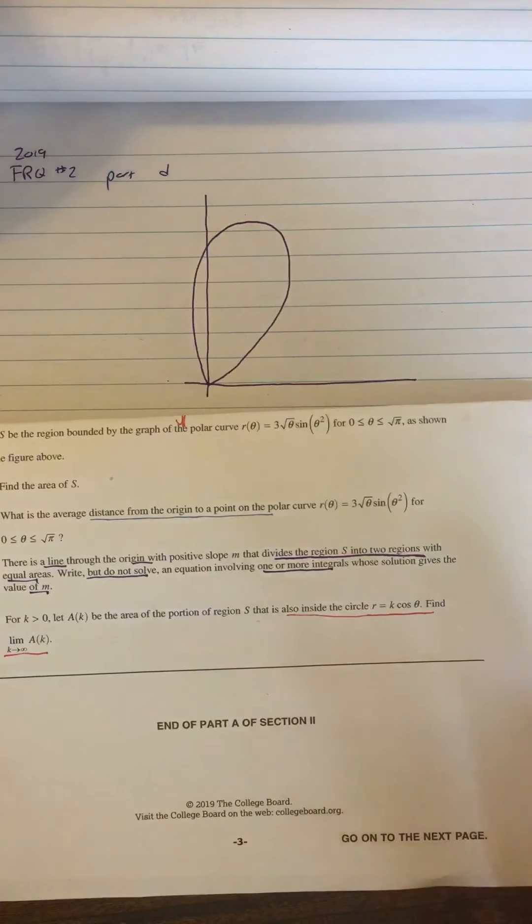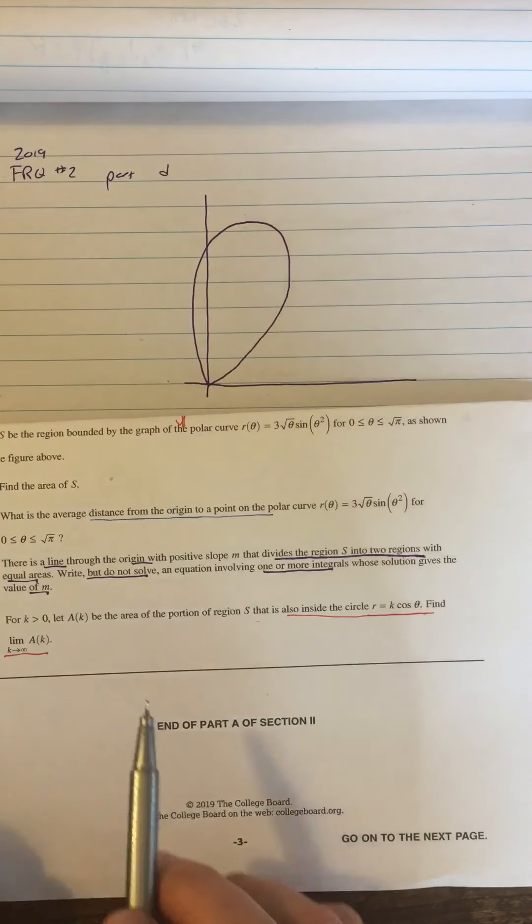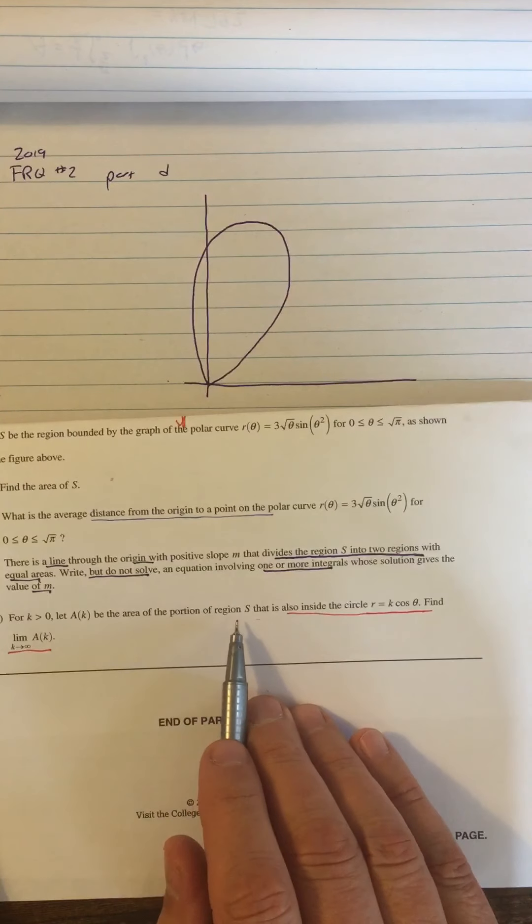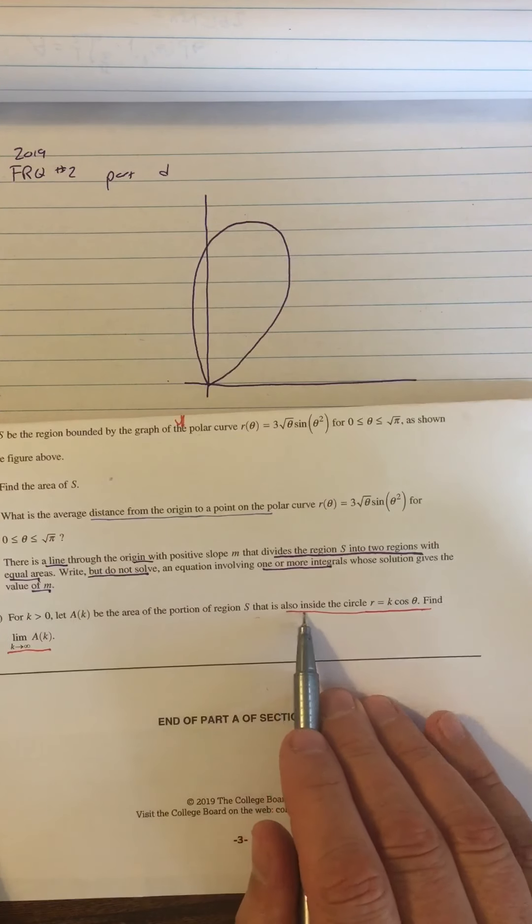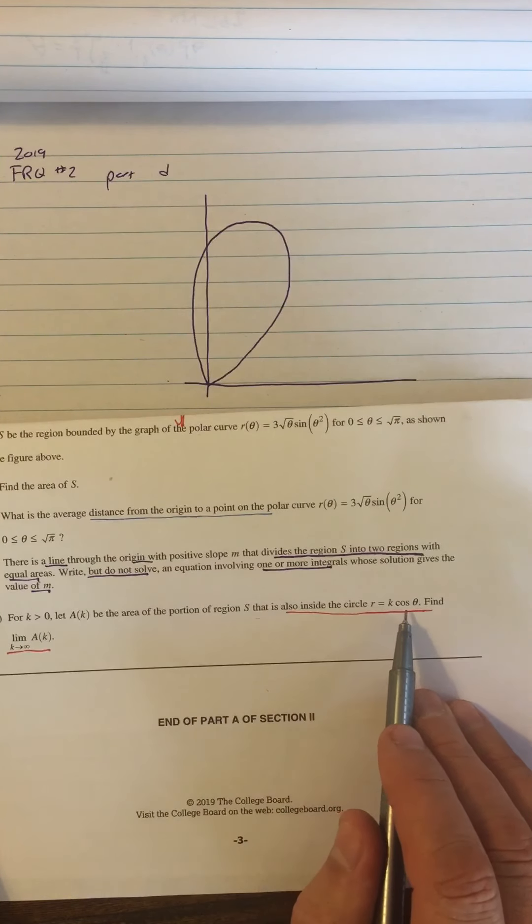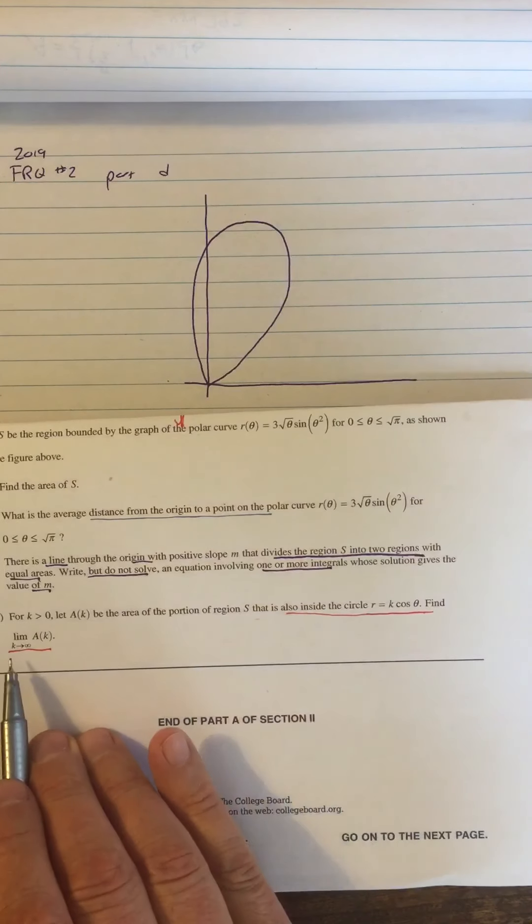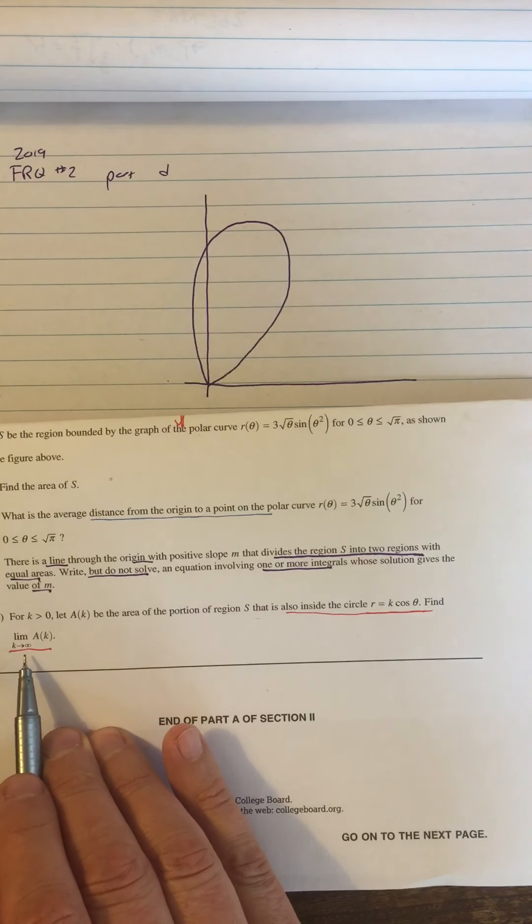So in part D of this question, which is definitely the hardest part, we're looking for the area of the portion of region S that is also inside the circle r equals k cosine theta, and then taking the limit as k approaches infinity.